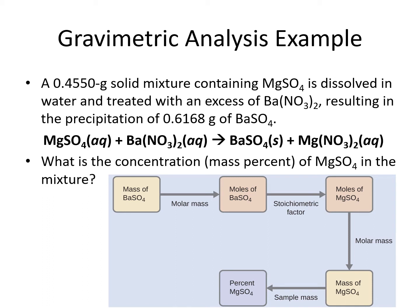Once we have moles, we can use stoichiometry to go from moles of our known product, barium sulfate, to the moles of the magnesium sulfate, which is not known. Then we can go from the moles of magnesium sulfate to grams of magnesium sulfate that must have been in our original mixture.